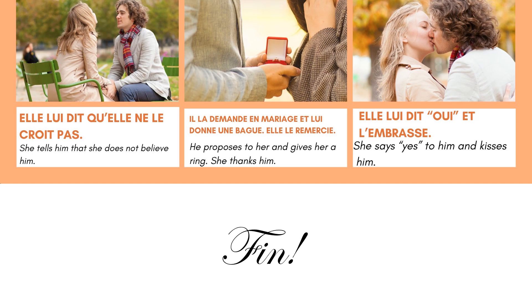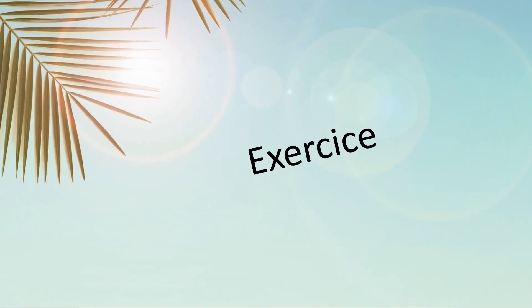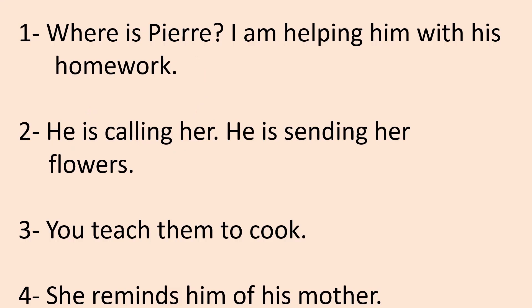I hope you were able to see the difference in the use of the direct and indirect object pronouns in this story. Now here is an exercise — four sentences in English which you're going to translate into French. Number one: Where is Pierre? I'm helping him with his homework. Number two: He loves her. He's sending her flowers. Number three: You teach them to cook. Number four: She reminds him of his mother.